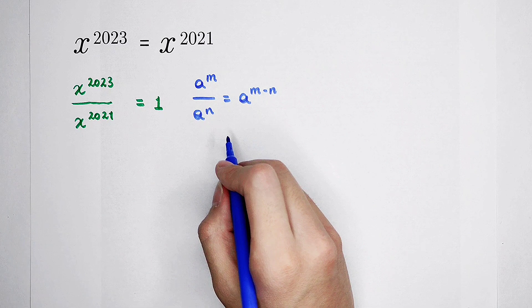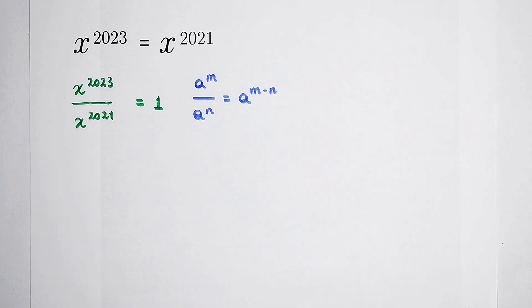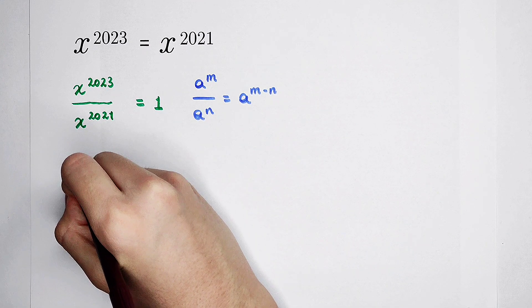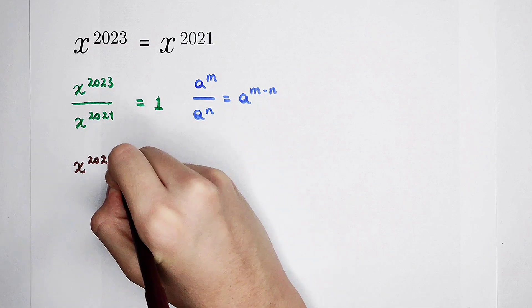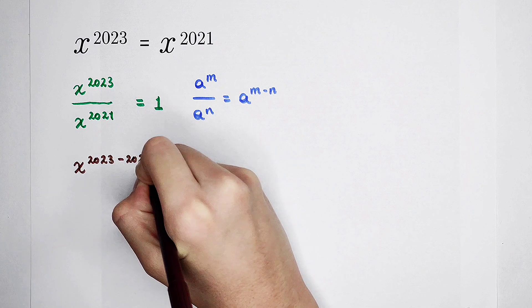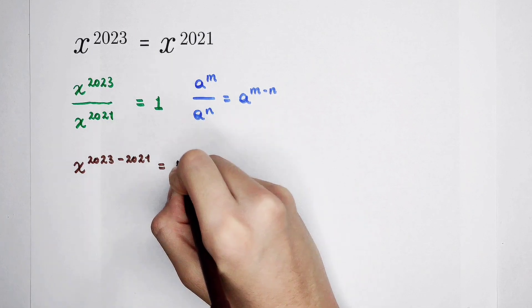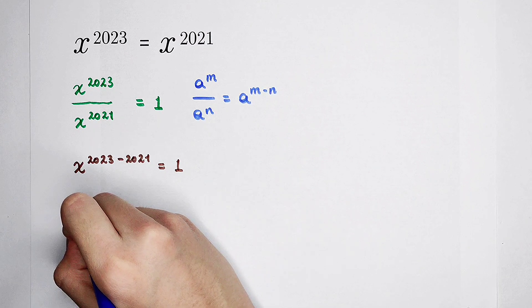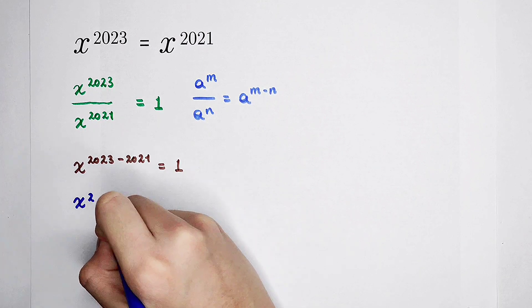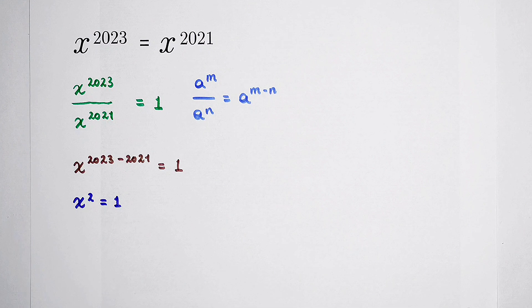Since the subtraction of the exponents is just 2, the left-hand side is x to the power of 2023 minus 2021 is equal to 1. And the left-hand side is x to the power of 2 is 1. x squared is 1. And this equation is so nice.